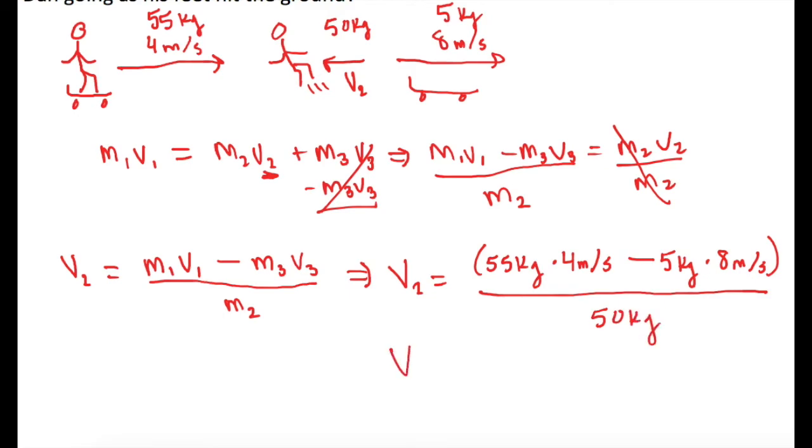Okay, let's go ahead and plug it in and see what we get. So I'll grab my calculator. We get 55 times 4 is 220 minus 8 times 5 is 40. So that's 180 for the top divided by 50, which gives us 3.6 meters per second for Dan.